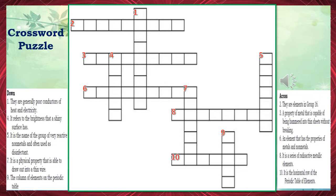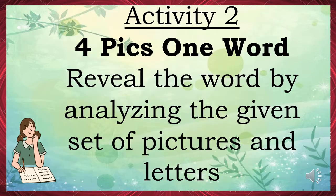Number 7: It is a physical property that is able to draw out into a thin wire. The correct answer is ductile. Number 9: The column of elements on the periodic table. The correct answer is group. Hope you've got all correct answers.